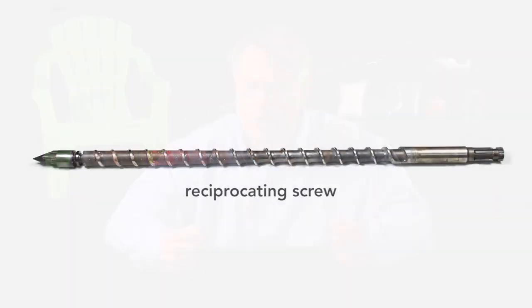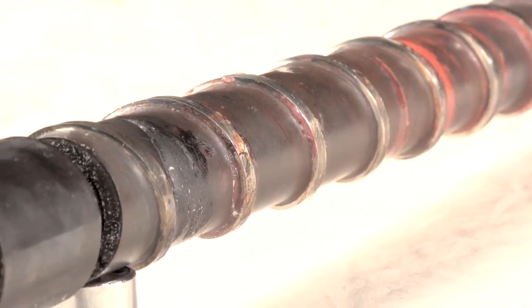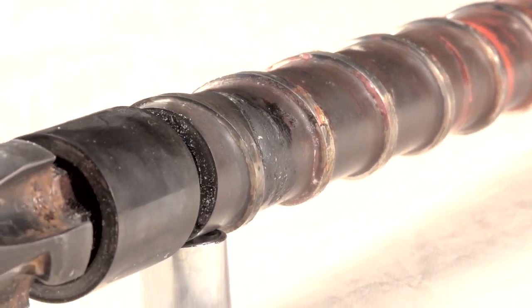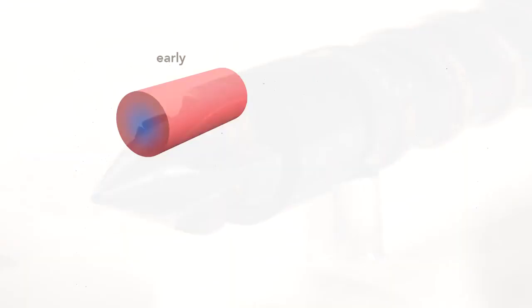The solution was this, the reciprocating screw, often regarded as the most important contribution that revolutionized the plastics industry in the 20th century. In the earlier plunger-style machines, plastic filled completely the cylindrical barrel. But as I showed you, the plastic was not at a uniform temperature.